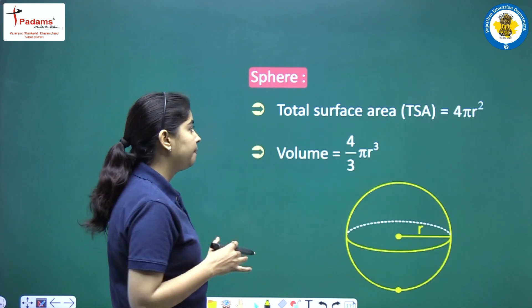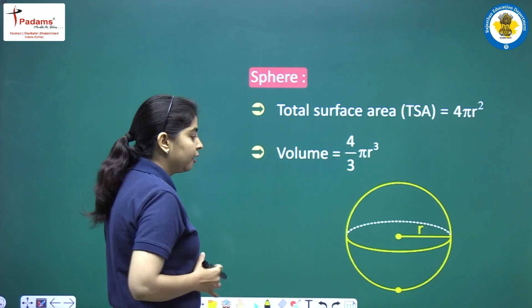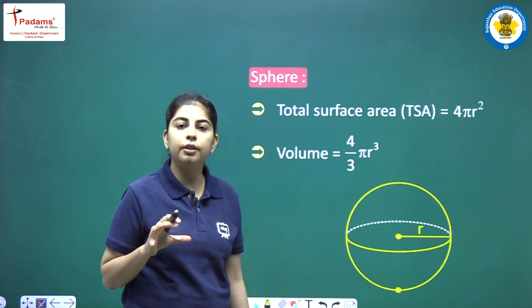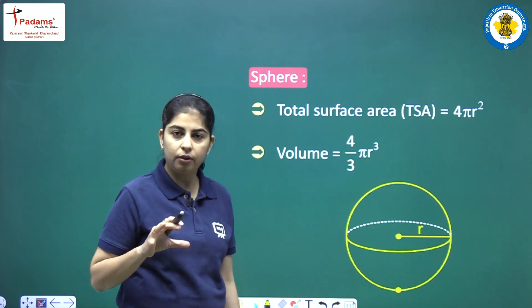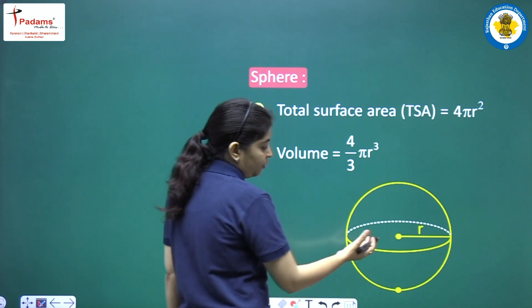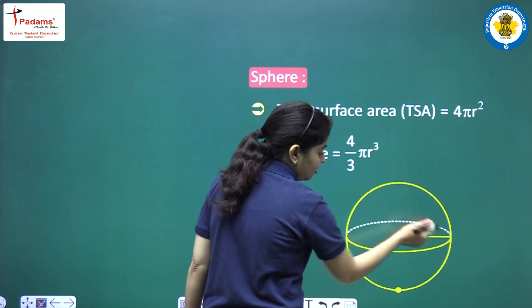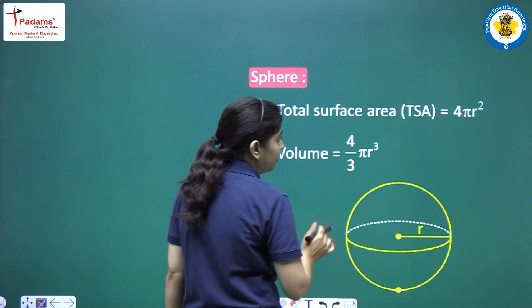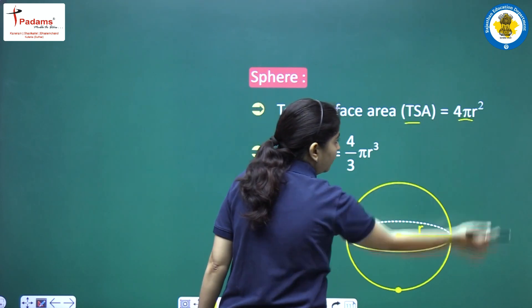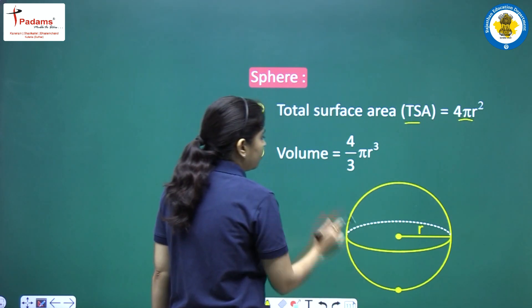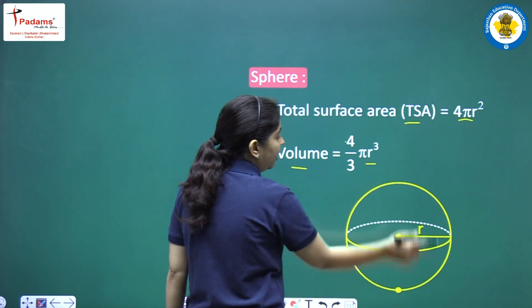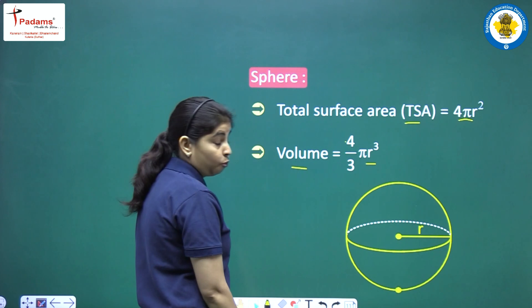Next, sphere — like a ball. We have a spherical object with radius r. The total surface area of a sphere is 4πr². The volume is (4/3)πr³.